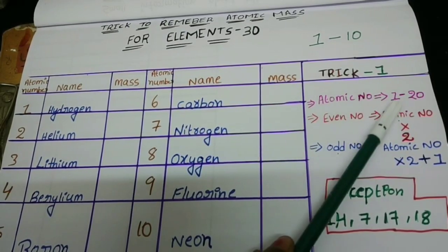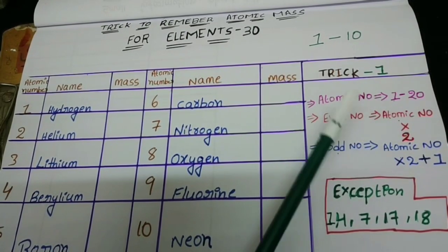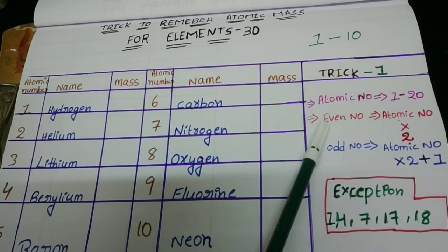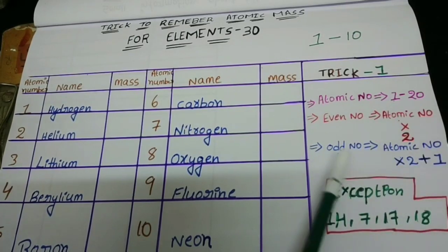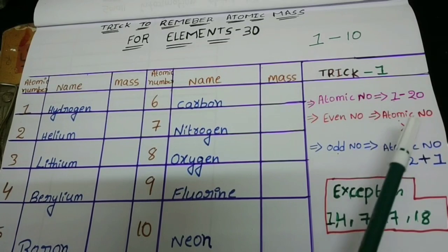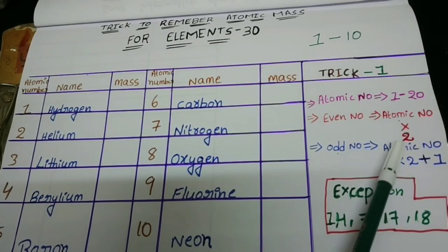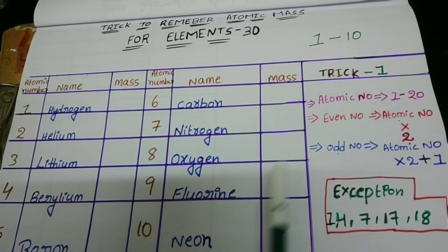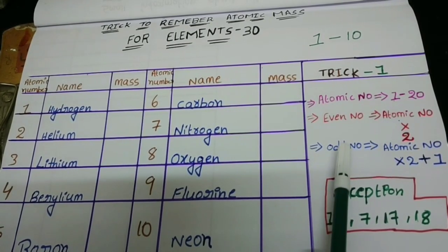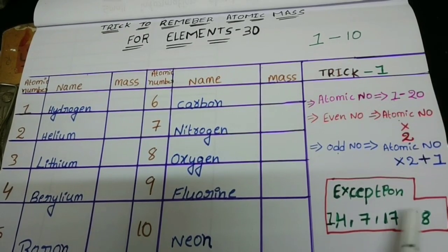For elements 1 to 20: if the atomic number is even, multiply atomic number by 2 — that gives the atomic mass. If the atomic number is odd, multiply atomic number by 2 and add 1 — that gives the atomic mass. The exceptions to remember are atomic numbers 1, 4, 7, 17, and 18.